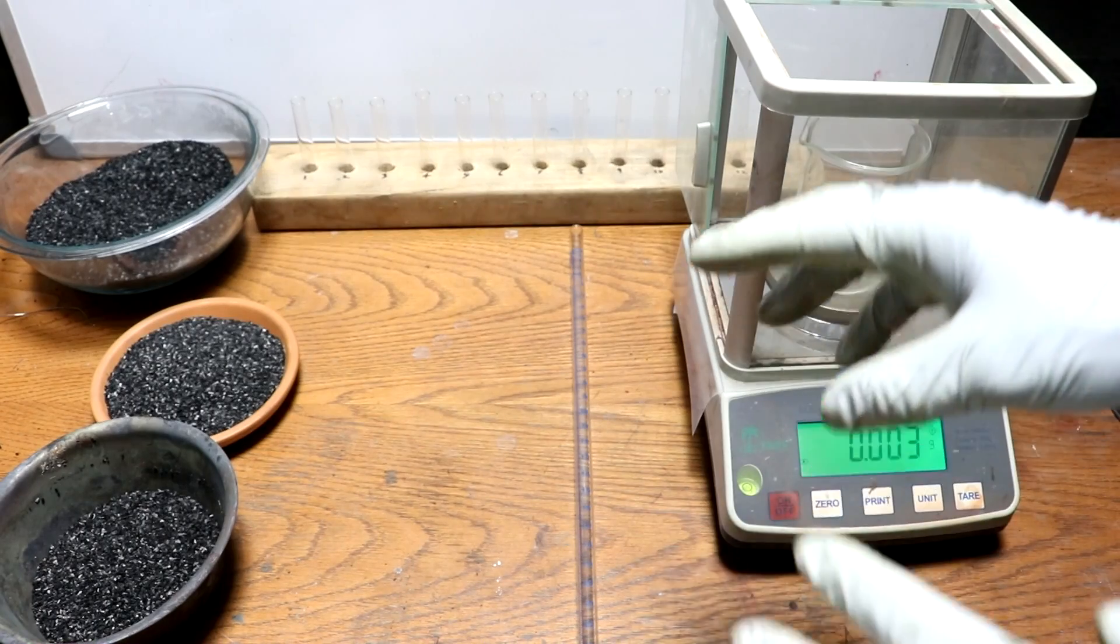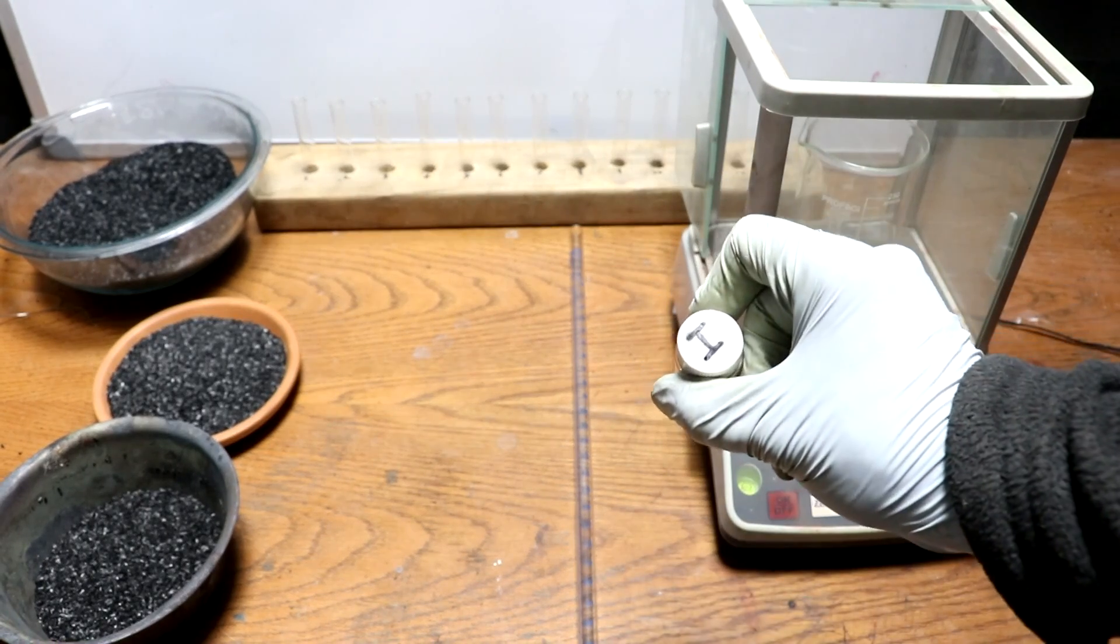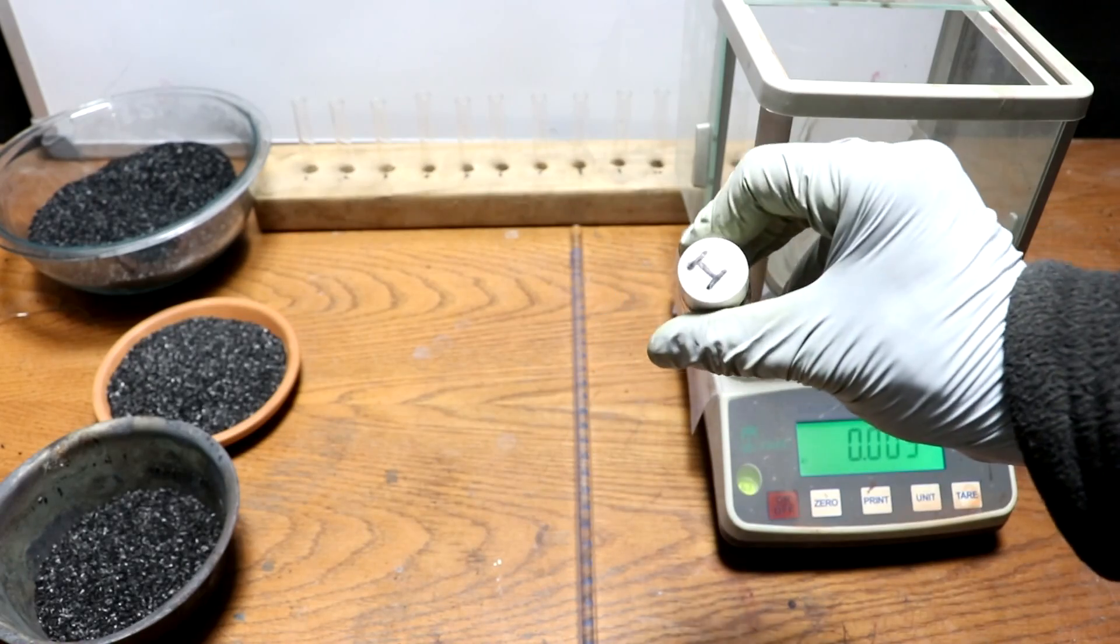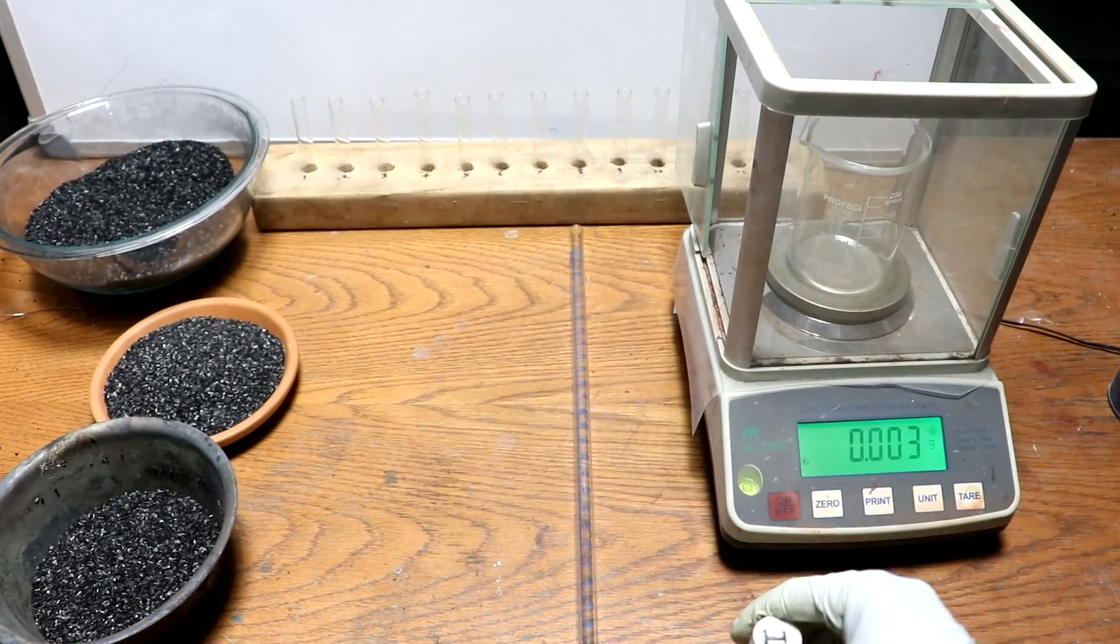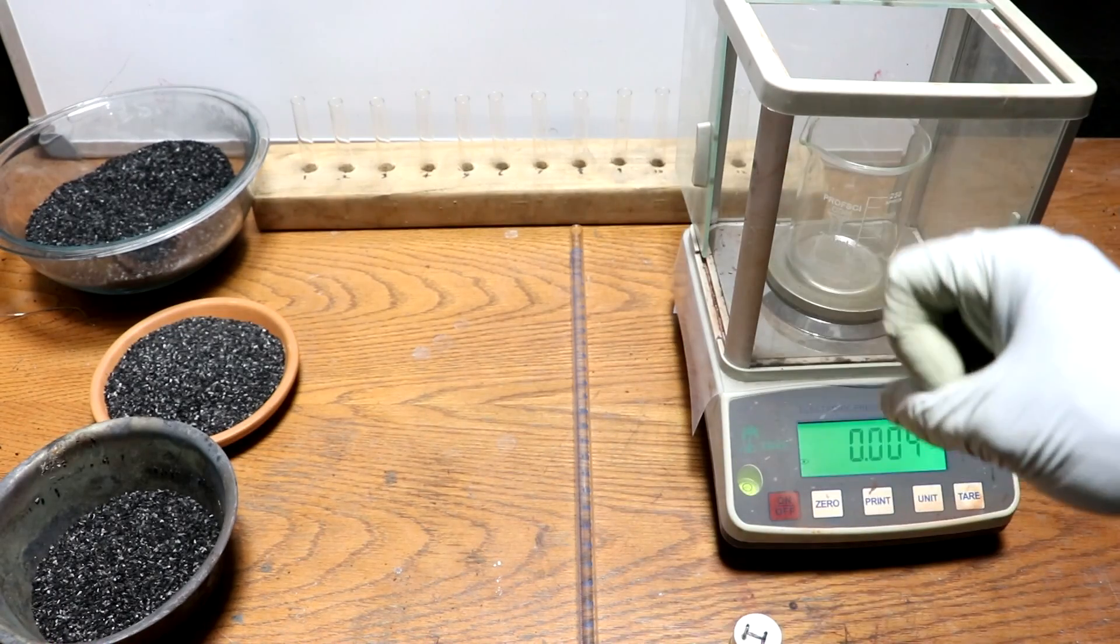So what I'm going to do to test the charcoal is pretty much just see how much iodine it can absorb. So how many milligrams of iodine can a gram of charcoal absorb? The more iodine the more surface area. They should be directly related.